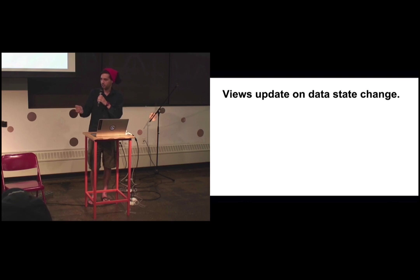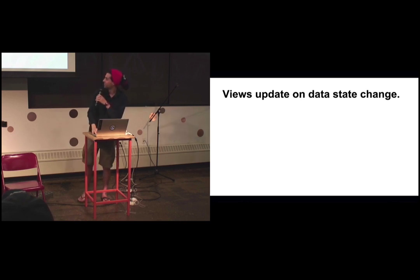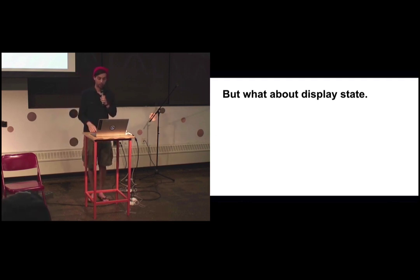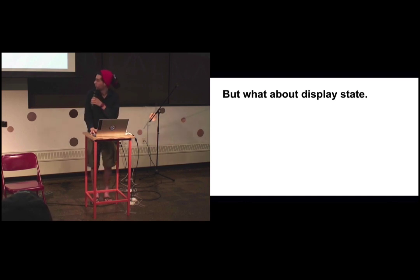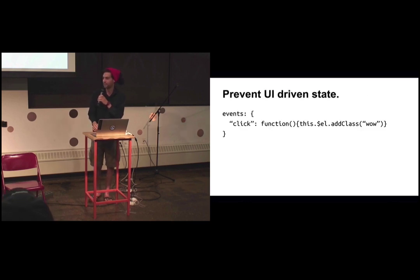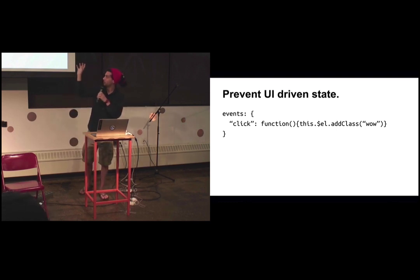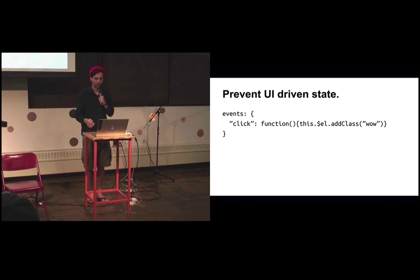Views update on data change — asynchronous, layouts, regions, show — we're all good. But you might say, 'People can click things and it changes how my views look, and if I call render, my view state is gone.' How do I handle that in a deeply nested structure? We're going to prevent UI-driven state. Using jQuery's addClass — probably in your code — is not a good idea. If you call re-render on that, the class is gone because you clicked it, something changed asynchronously, you re-render, and the class is gone. Someone files a bug.